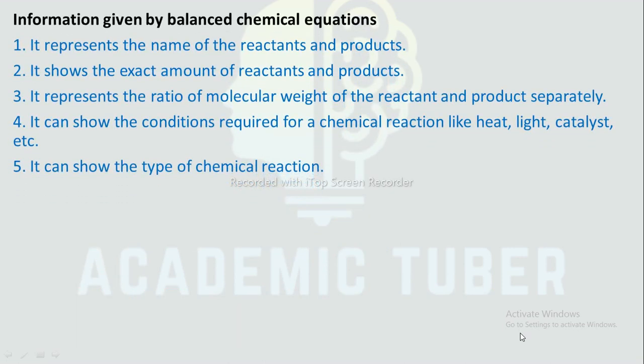Now we are going to discuss some of the information given by a balanced chemical equation. It represents the names of reactants and products. It shows the exact amount of reactants and products. It represents the ratio of molecular weights of the reactants and products. It can show the conditions required for the chemical reaction like heat, light, catalyst, etc. It can show the type of chemical reaction.